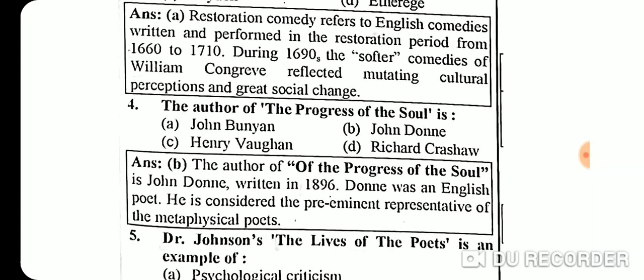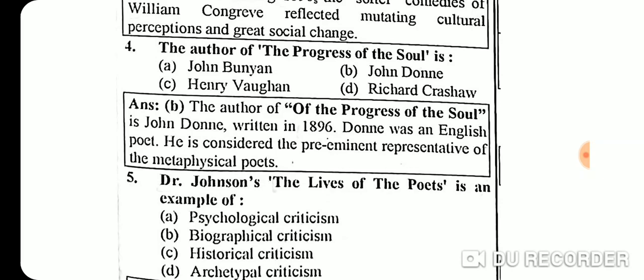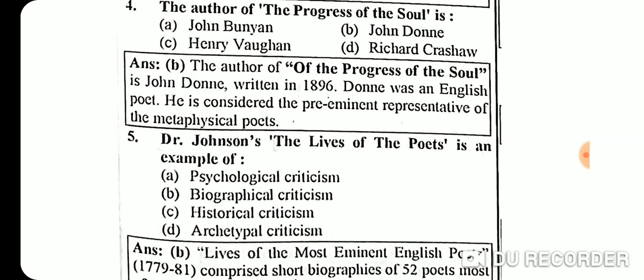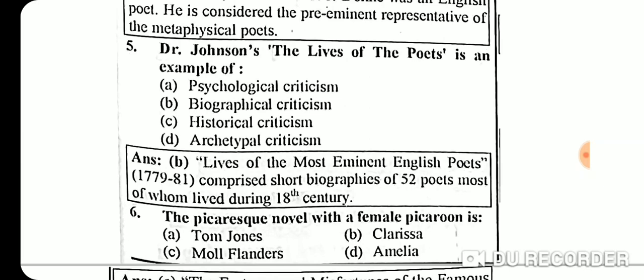Question 4: The author of 'The Progress of the Soul' is John Donne. He is the author of 'The Progress of the Soul,' written in 1601. Donne was an English poet considered the preeminent representative of the metaphysical poets.